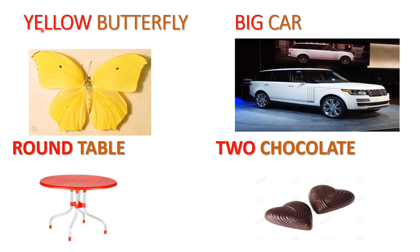So yellow, big, round, and two — these are describing words. These are describing words. That means they are adjectives.